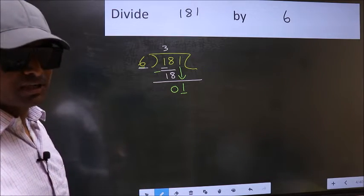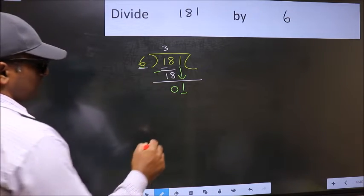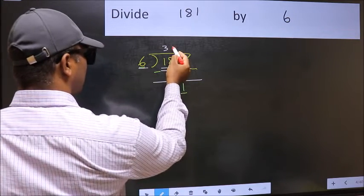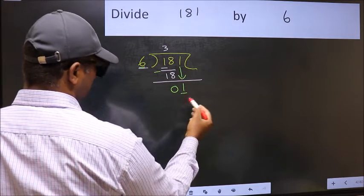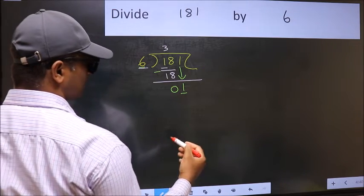You should not do. Instead, what you should think of doing is, what number should we write here. If I take 1, we will get 6. But 6 is larger than 1. So what we should do is, we should take 0.